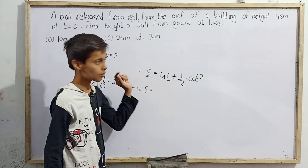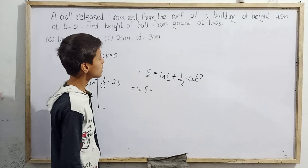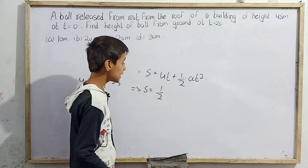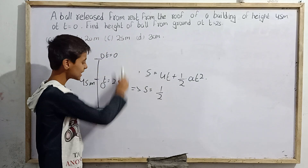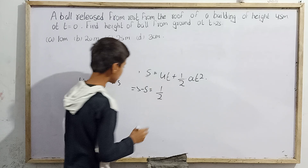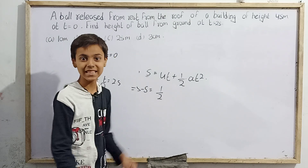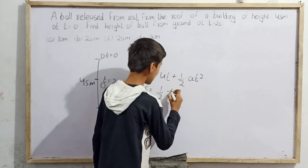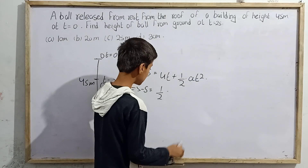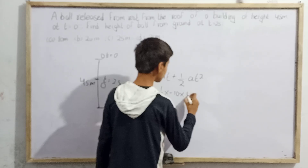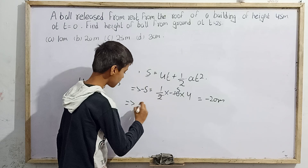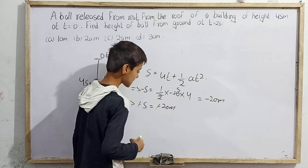The initial velocity is zero since the ball is released from rest. So s equals zero into t, which is zero, plus half g t squared. Since displacement is downward (negative direction), minus s equals minus half g t squared. Putting values: minus g is minus 10, t squared is four (two squared), so minus s equals minus 10 times half times 4, which gives minus 20 meters.